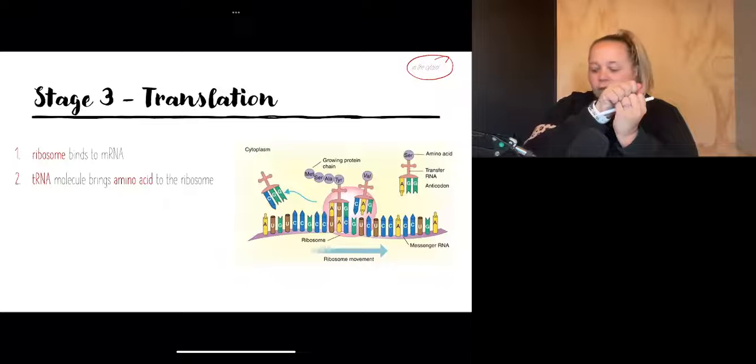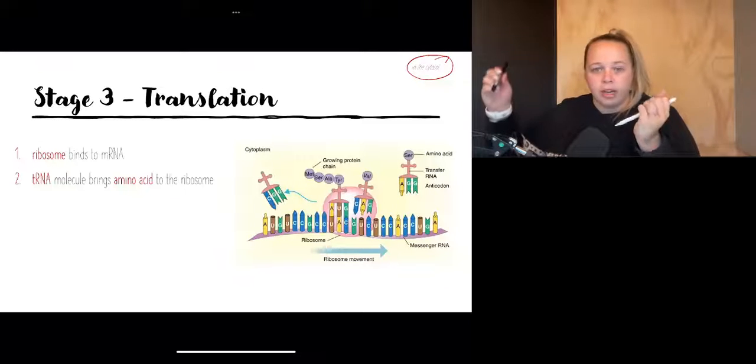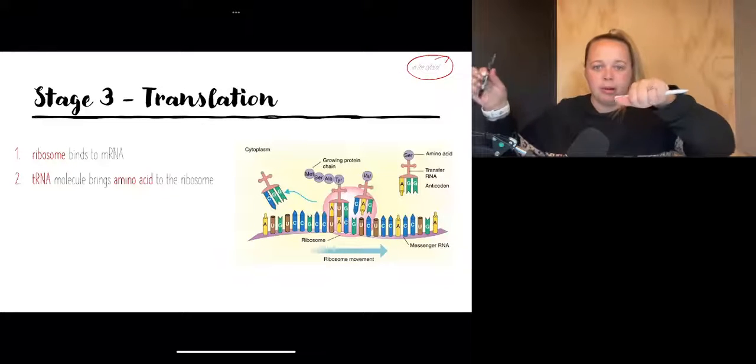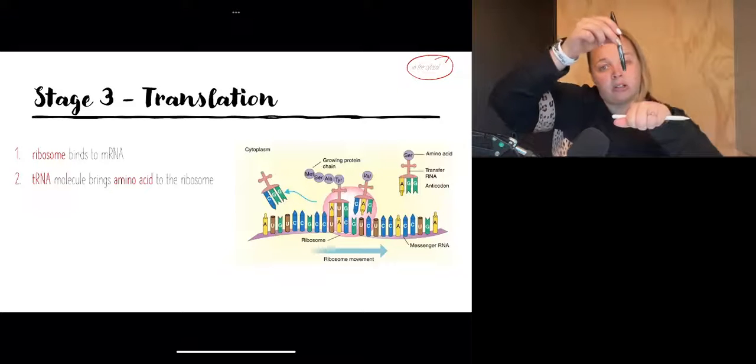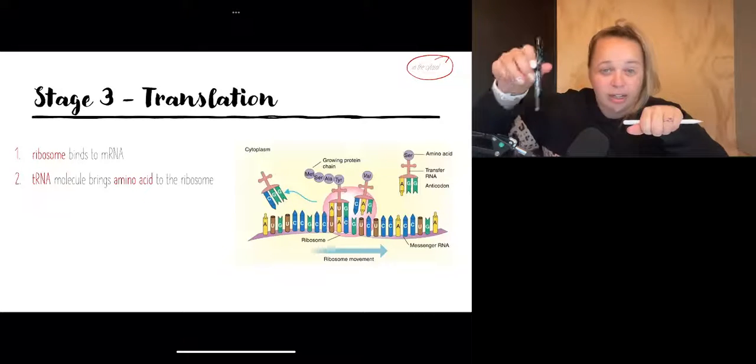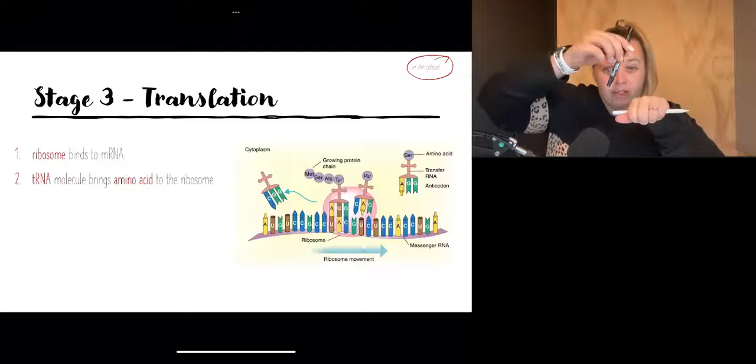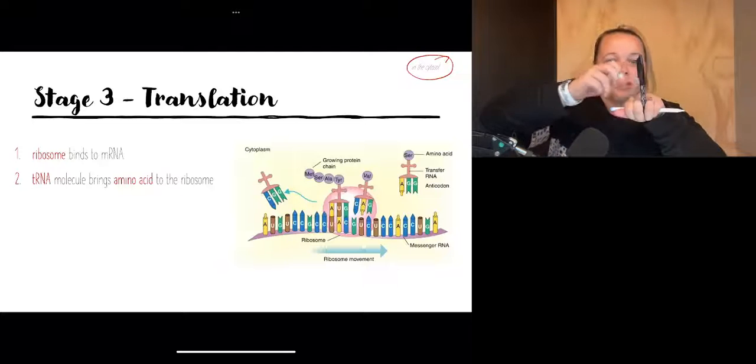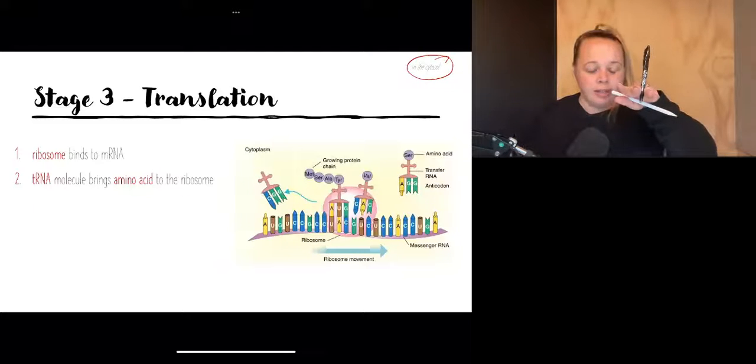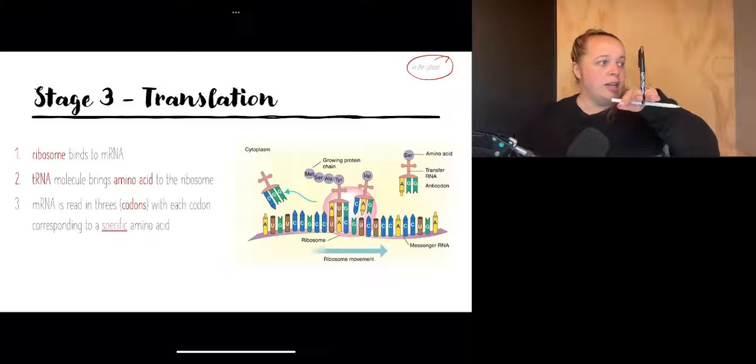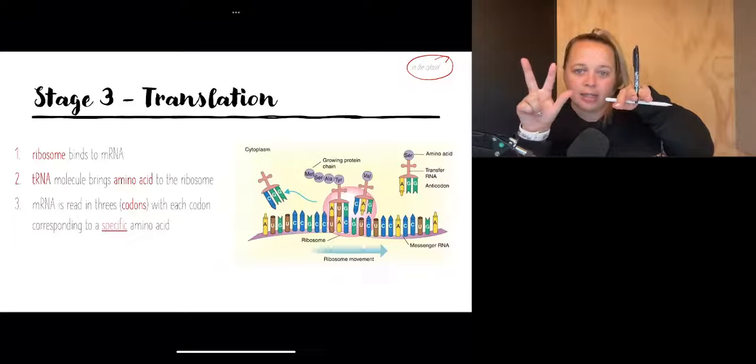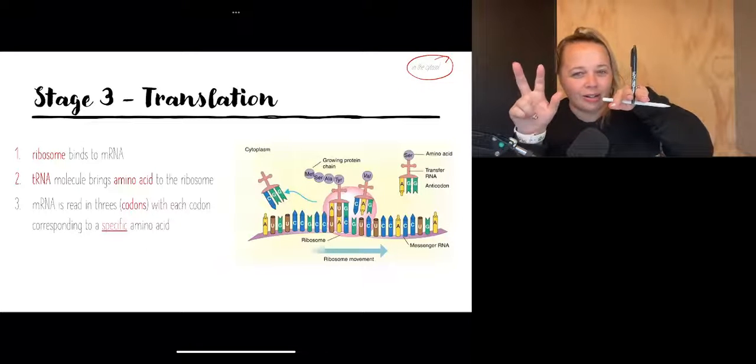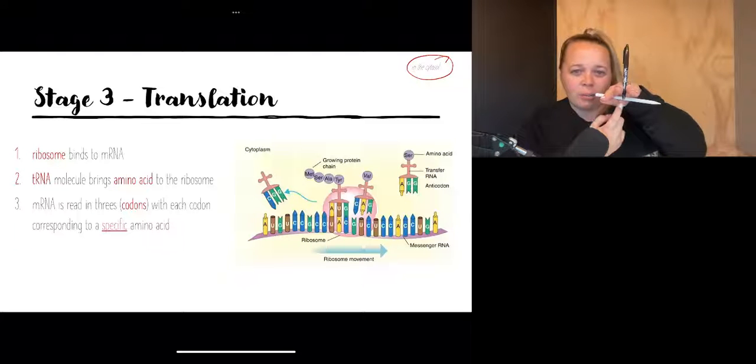After that there's also another molecule called tRNA. Now the tRNA molecule, which we can go back to your nucleic acids notes to have a look at, looks like that trident or that clover leaf shape. It comes along and binds to the ribosome like this. On the other end of the tRNA are three bases and that's called an anticodon, and they actually match up with another three bases on the mRNA.